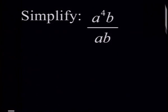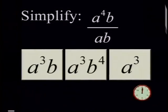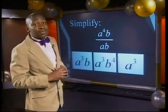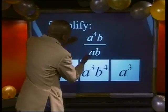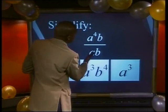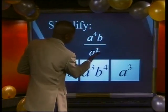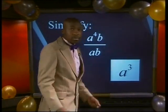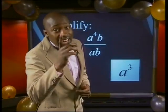a to the power of 4 multiplied by b, all divided by a multiplied by b. Here are three possible answers — which one is correct? This was easy, right? You subtract the exponents of the a's and cancel the b on the top and on the bottom. Then you're left with a to the power of 3. Told you it was easy!